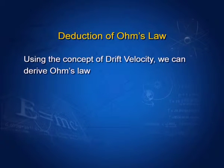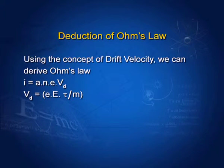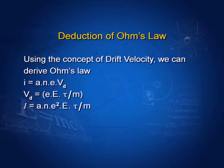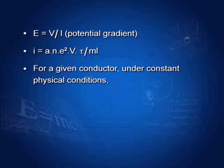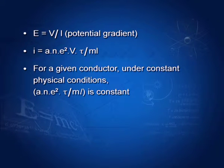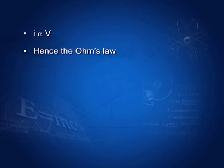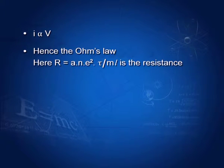Deduction of Ohm's Law using the concept of drift velocity: we know I = ANe × V_d, and V_d = eEτ/M. Substituting the value of V_d, we get I = ANe²Eτ/M. Since electric field E equals potential gradient, E = V/L. Substituting, I = ANe²Vτ/(ML). For a given conductor under constant physical conditions, ANe²τ/(ML) is constant, so I is directly proportional to V. This is Ohm's Law. Here ANe²τ/(ML) is a constant called resistance R.